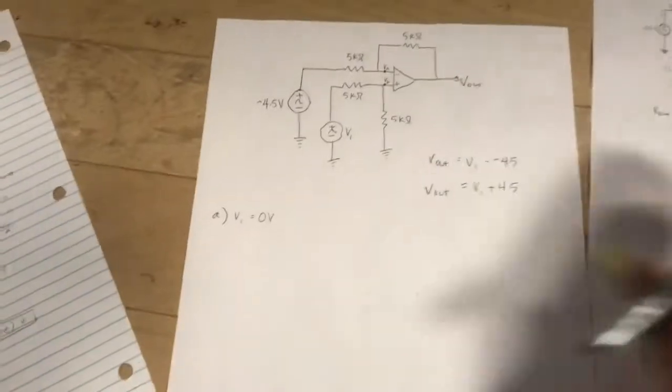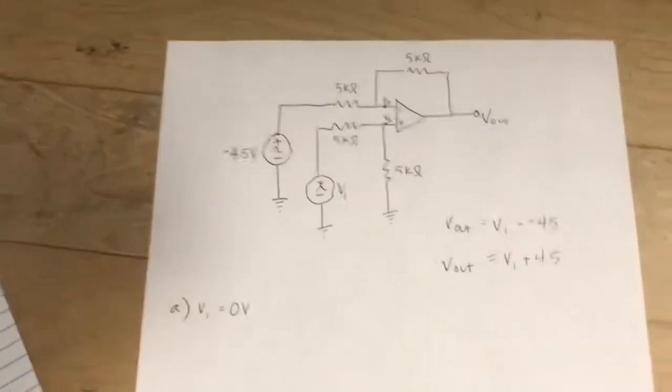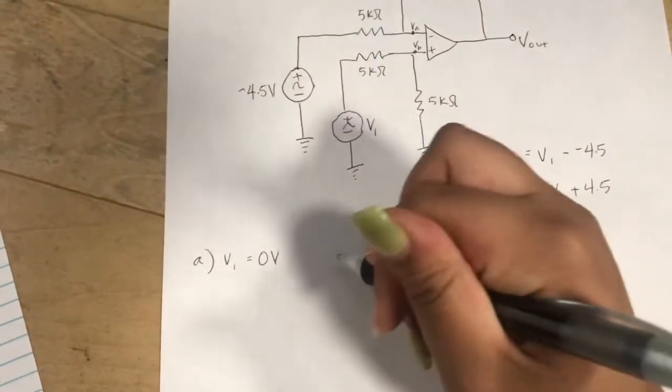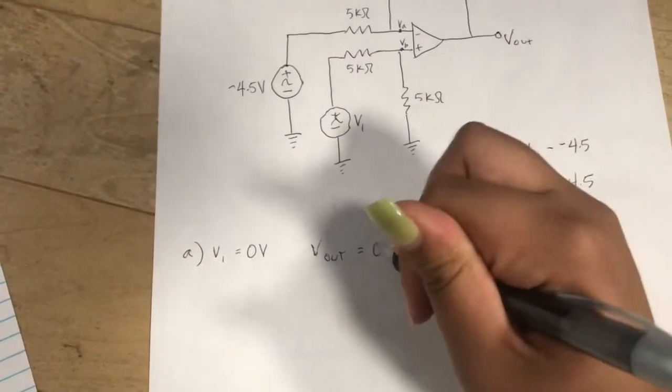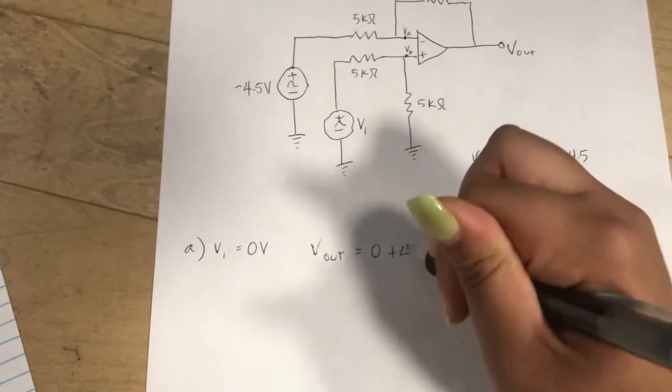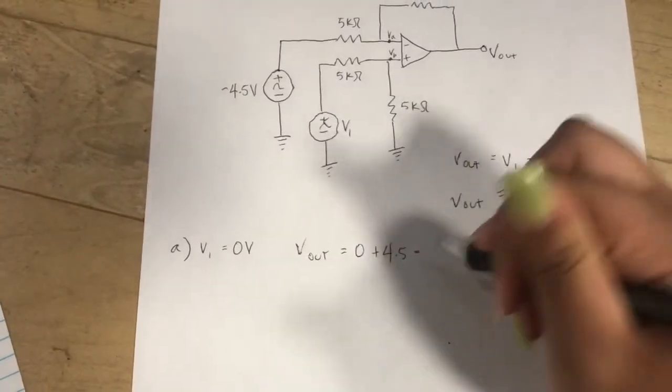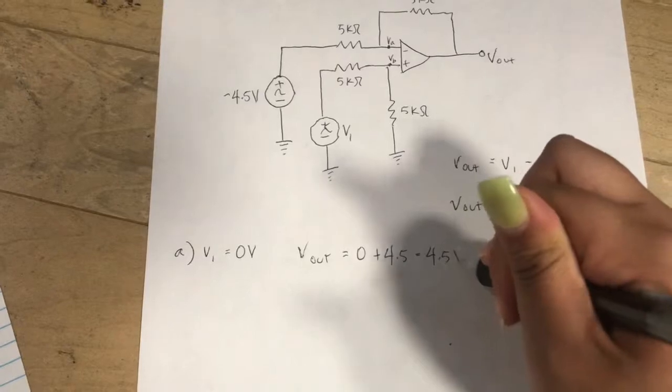First we're going to start with V1 equals 0 volts. So Vout equals 0 plus 4.5 equals 4.5 volts.